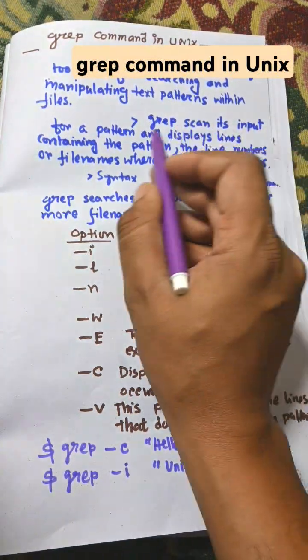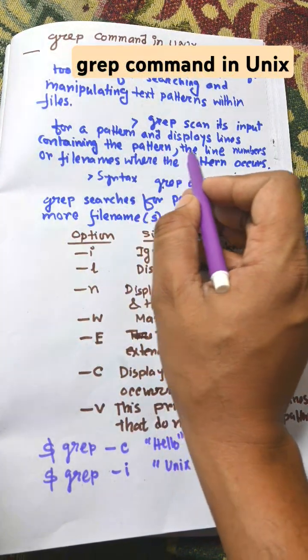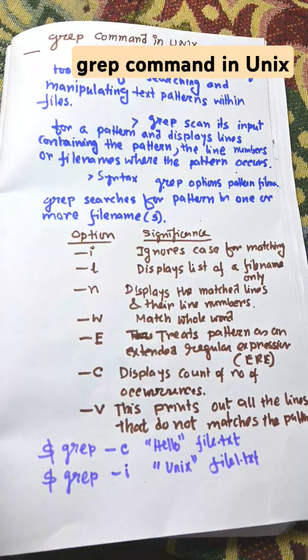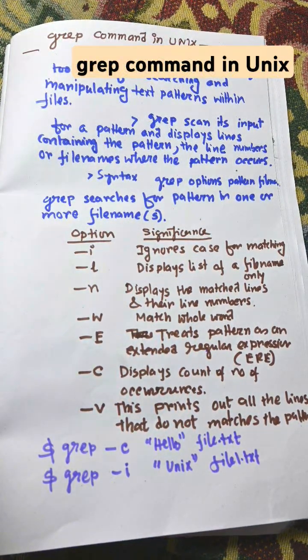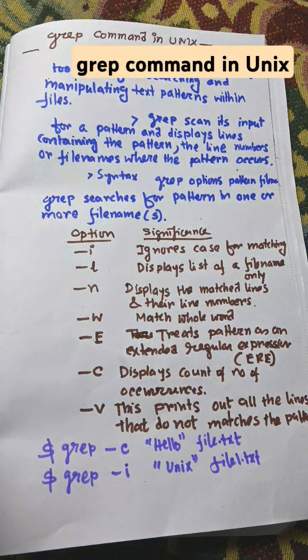GRIP scans its input for a pattern and displays lines containing the pattern, the line numbers, or file names where the pattern occurs. It will scan the input for a pattern and display the line number where the pattern exists from the file.